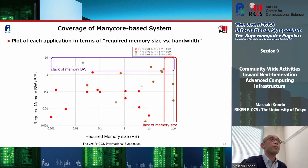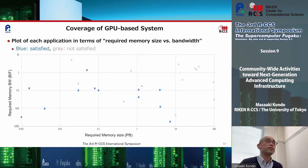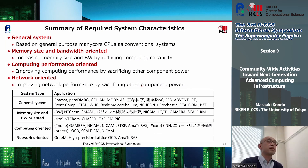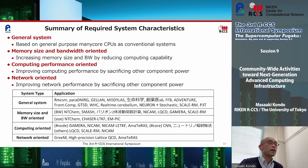Here is the case for the many-core-based system and the result for the GPU-based system. The summary of required system characteristics from the application analysis shows that several applications need more memory size and memory bandwidth, some are very computing-performance oriented requiring more nodes or cores, and some applications need more specialized network or higher network performance.